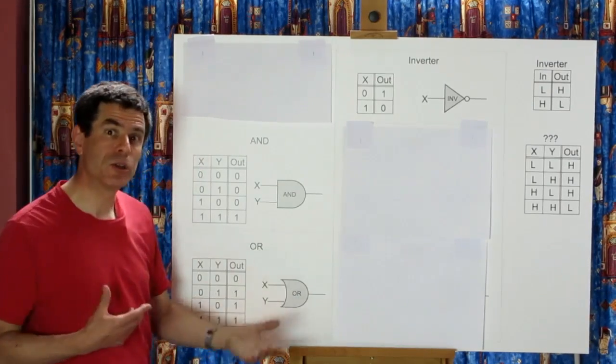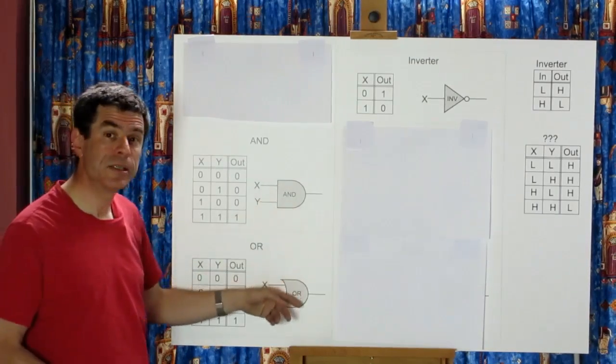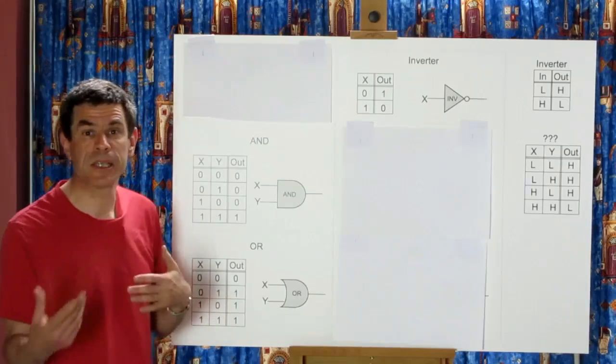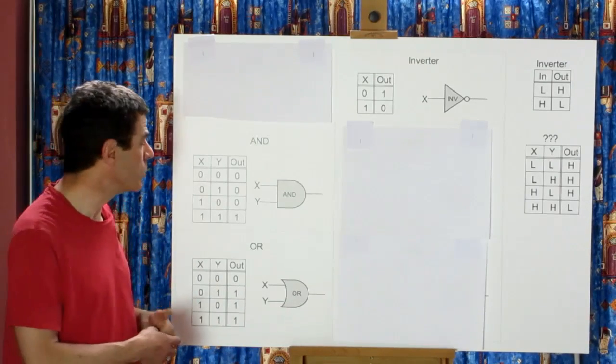So when I'm designing a logic system these are the two gates I use the most and then I use an inversion every now and then to get signals into the right sense to make things work.